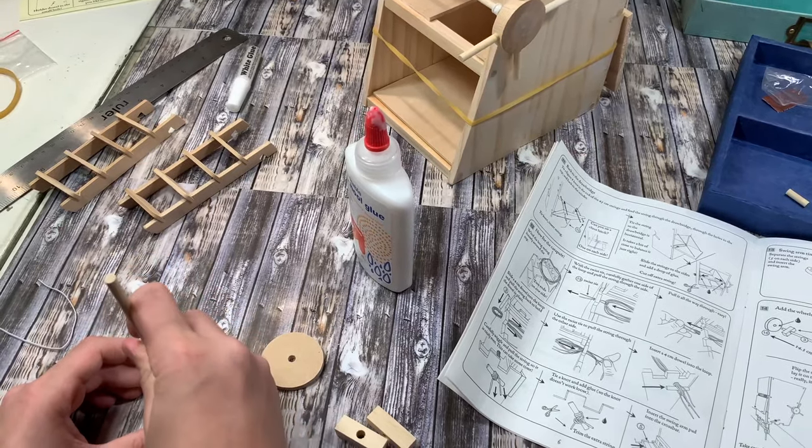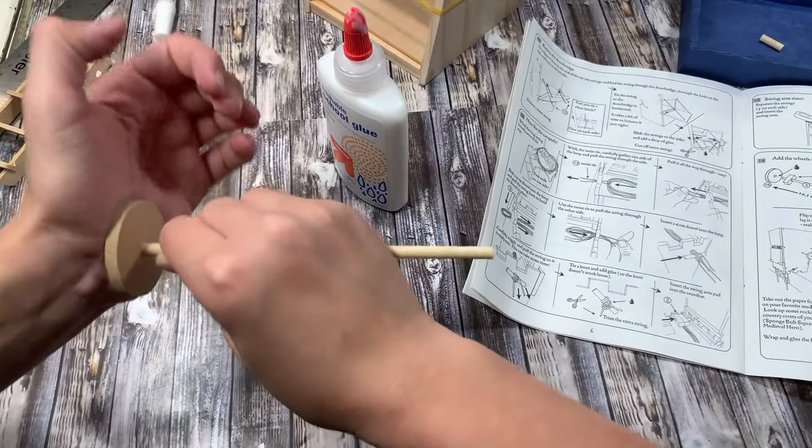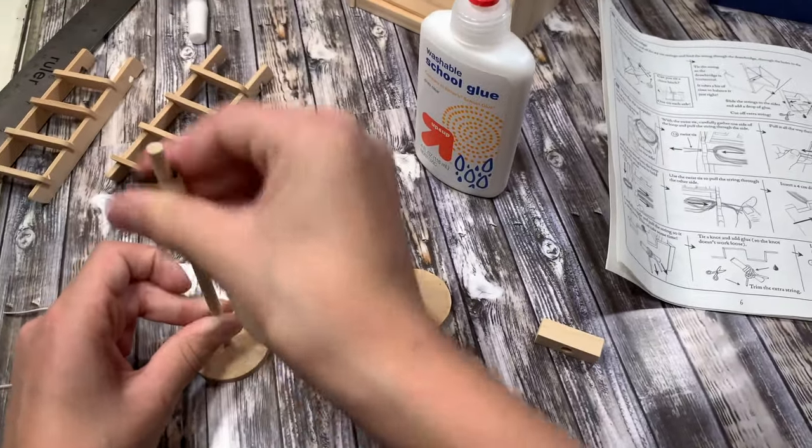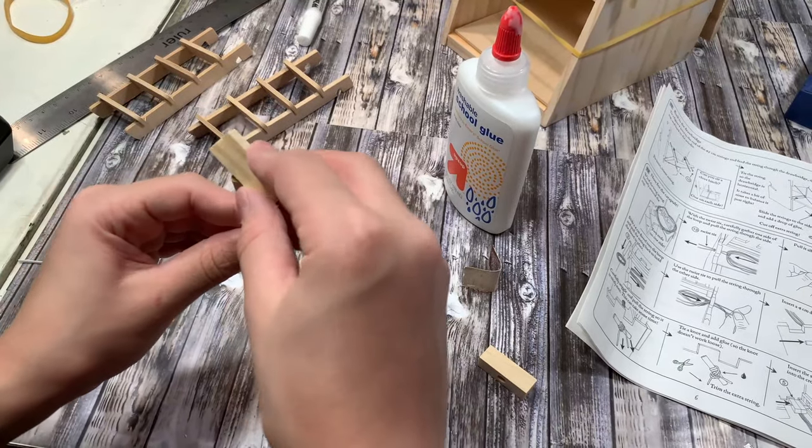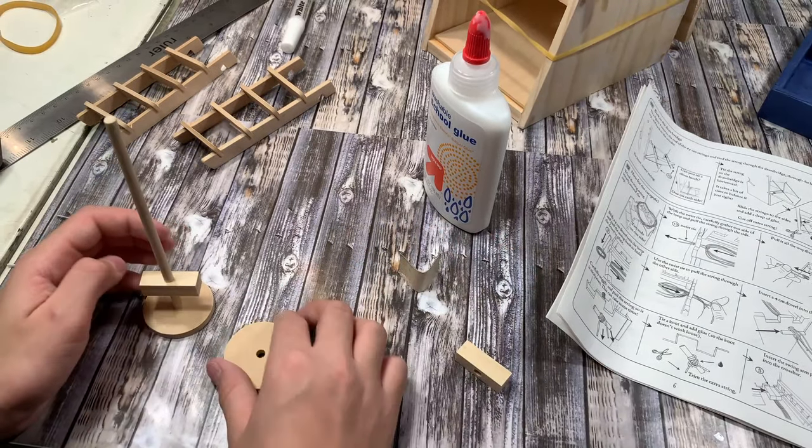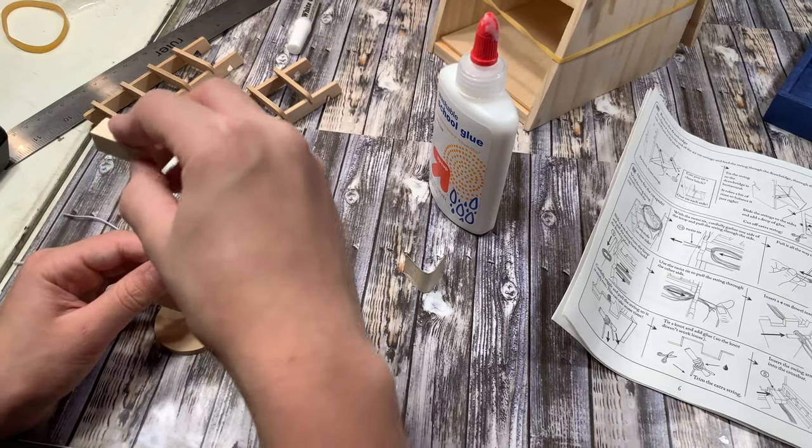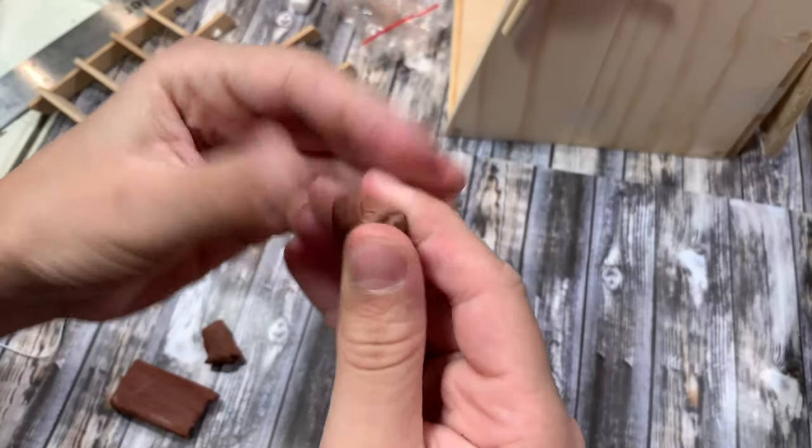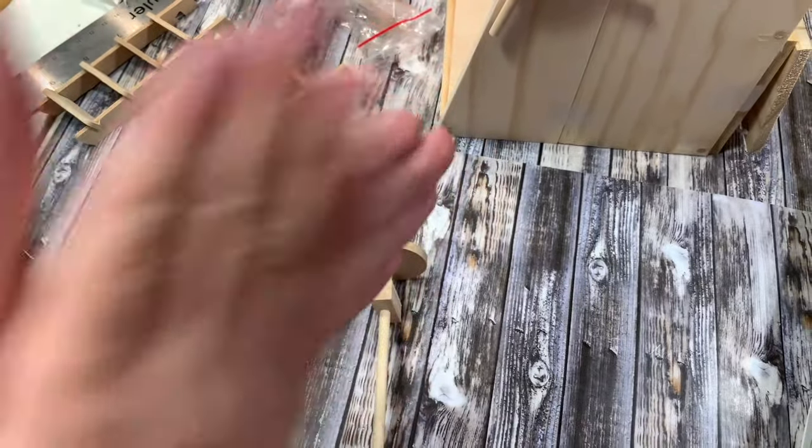So we're at the very end now and my son is having to sand down the dowels a little bit because they were just a touch too big for some of the pieces. Sandpaper does come in the kit but I found that working with an emery board sometimes was a little bit easier than the sandpaper that came in the kit so you might want to just have one on hand in case your dowels are too big.